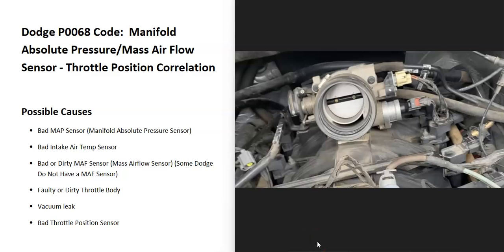Today I'm talking about a Dodge with the P0068 code — what it is and how you go about fixing it. The P0068 code stands for manifold absolute pressure / mass airflow sensor / throttle position correlation.